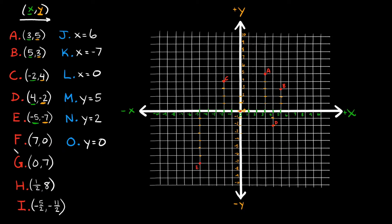Now let's move on to a couple that are a little trickier. Point F is at (7, 0). This tells you how many spaces you move in the x-direction, and this tells you how many spaces you move in the y-direction. Coming back to the origin, we move seven spaces in the x-direction — 1, 2, 3, 4, 5, 6, 7 — and then zero spaces in the y-direction. That means we stay right there — we're not moving up or down. So this point is point F at (7, 0).